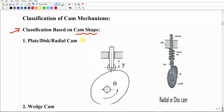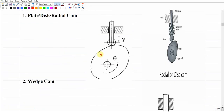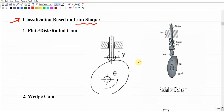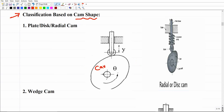Starting with classification based on cam shape: we have the plate cam, sometimes called disc cam, sometimes called radial cam — all three names refer to the same component. This is a schematic of this mechanism: the cam element rotates, the follower element is connected with a spring that keeps pushing the follower to be in direct contact with the cam at all times.